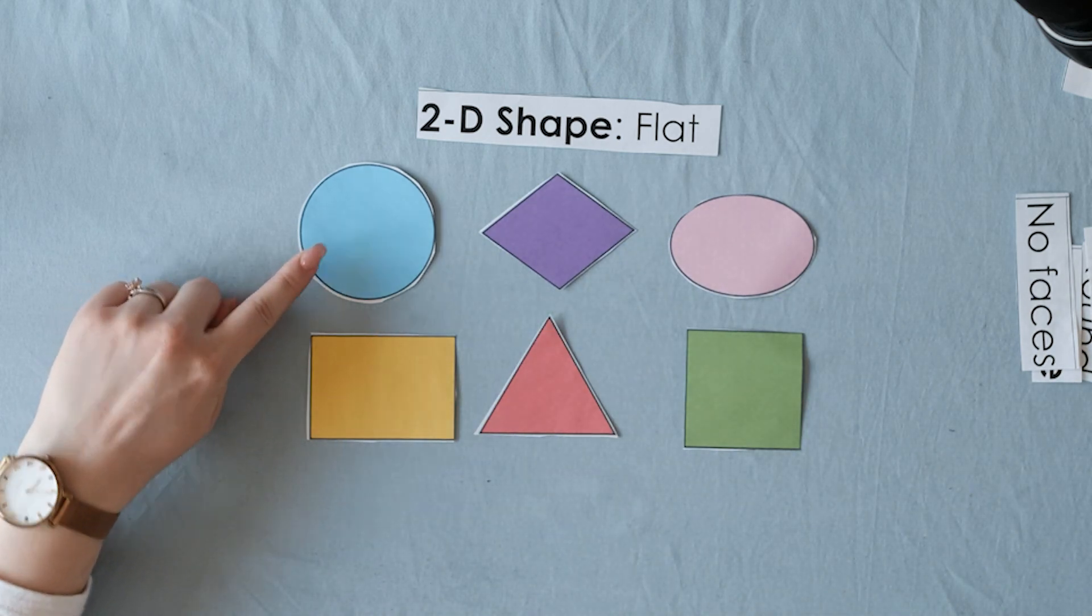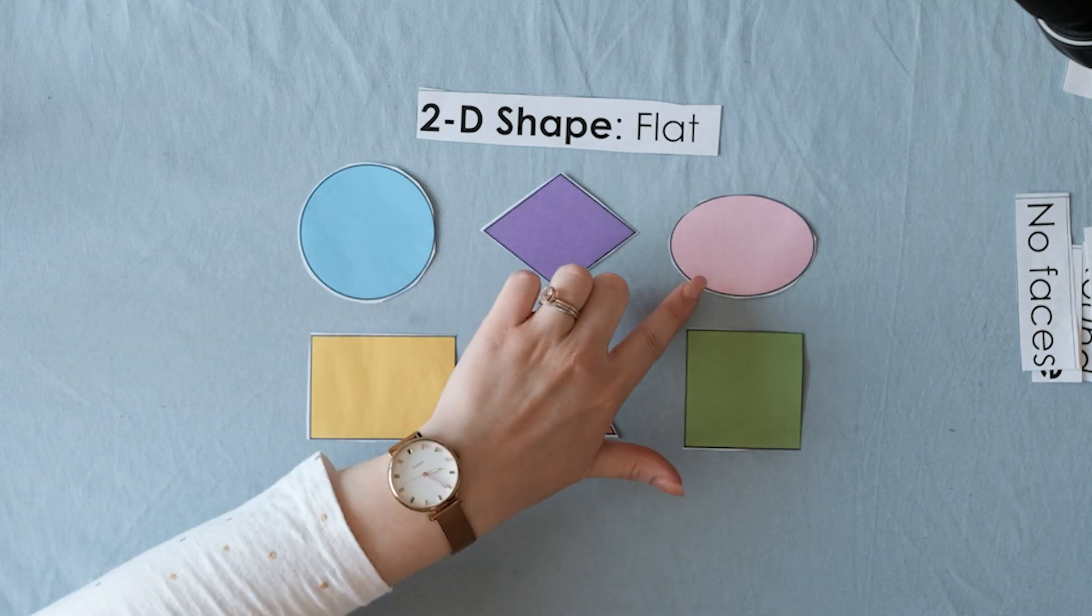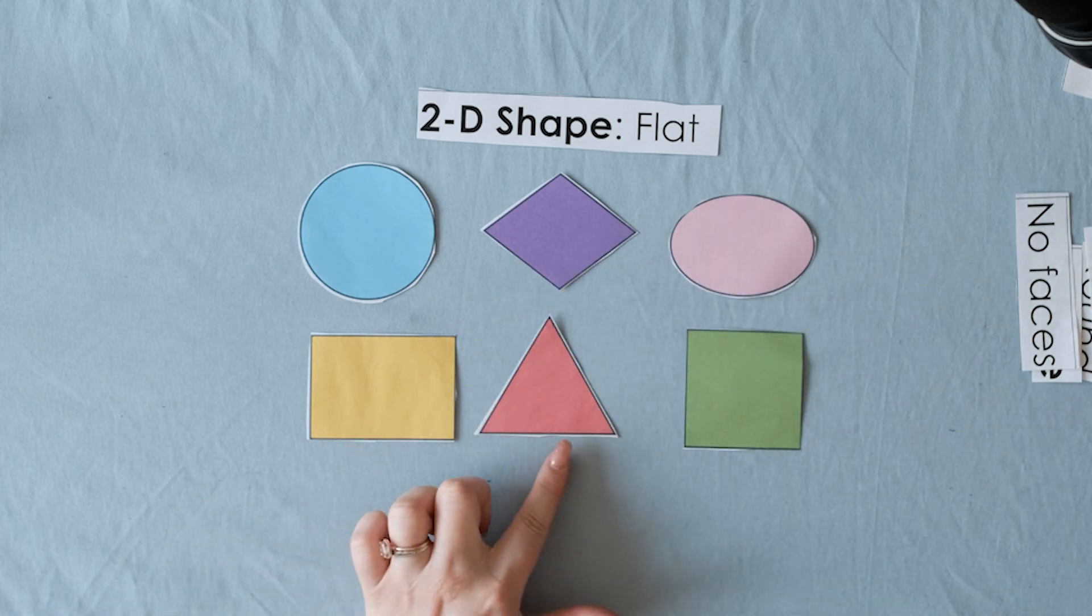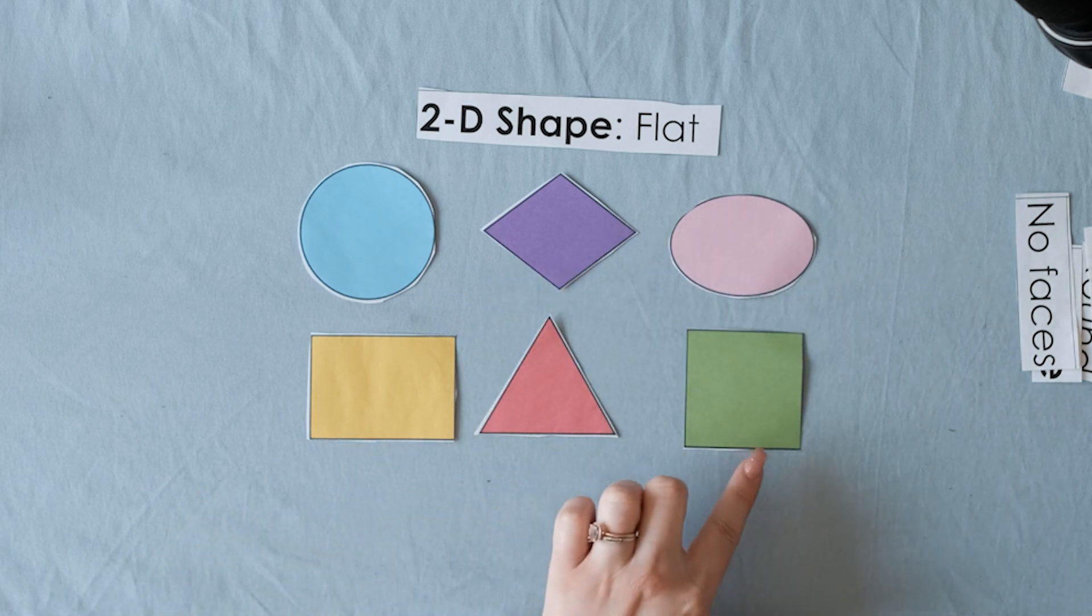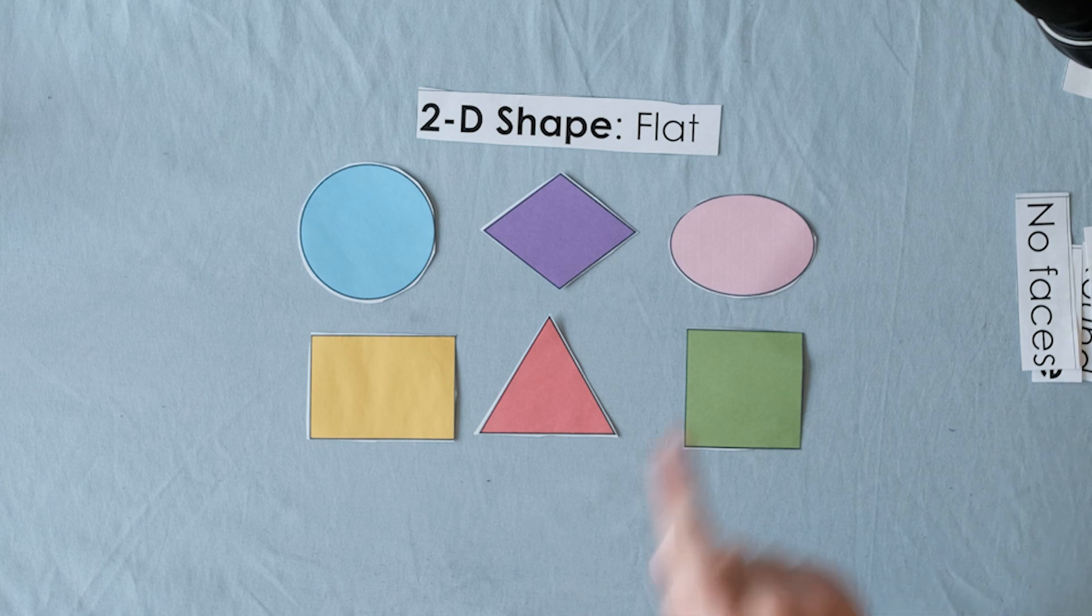So this is a circle, a diamond, an oval, a rectangle, a triangle, and a square. So these are all 2-D.